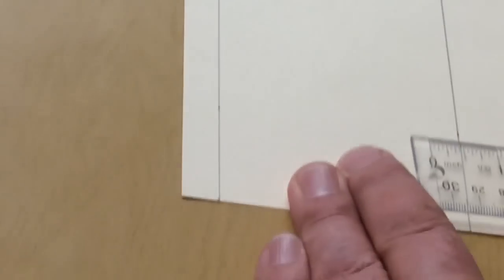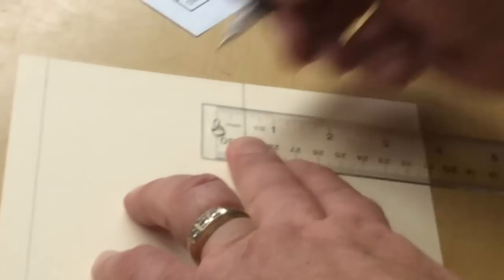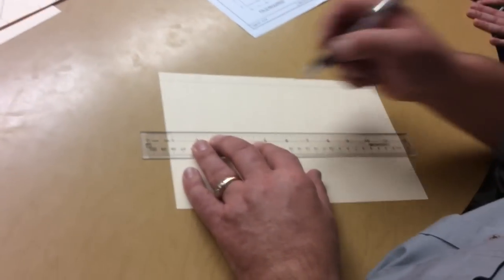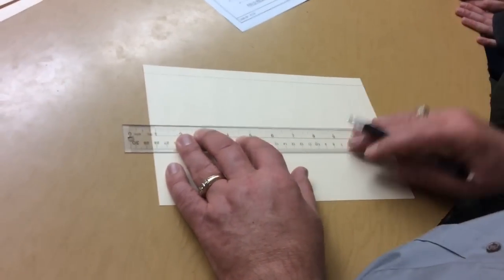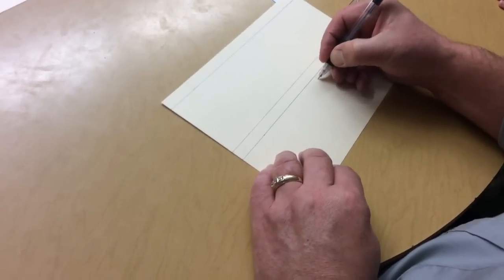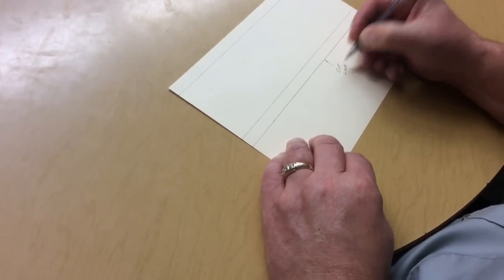Next, do the same thing. I'm going to measure up a half inch on the left side, and a half inch on the right. Make a mark. Draw another line, which is going to be parallel to my bottom line that I created in the first step. And now this is my cut line here.